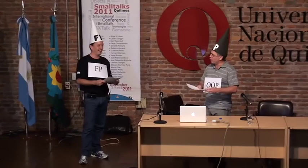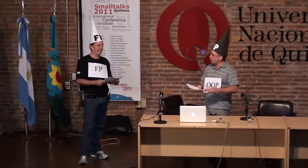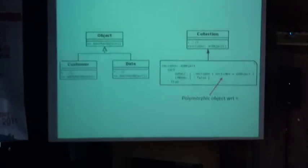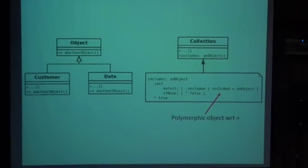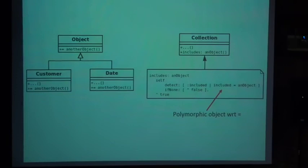So I have something that you cannot do with FP. You sure? Of course. It's unique to object-oriented programming. Let me show you what polymorphism is. You have a message 'equal' in the object class, re-implemented by subclasses. And when you use it in the collection to test for equality, you have a polymorphic object with respect to 'equal'. That's tough, huh? Yeah, obviously. I win — pay the beer.